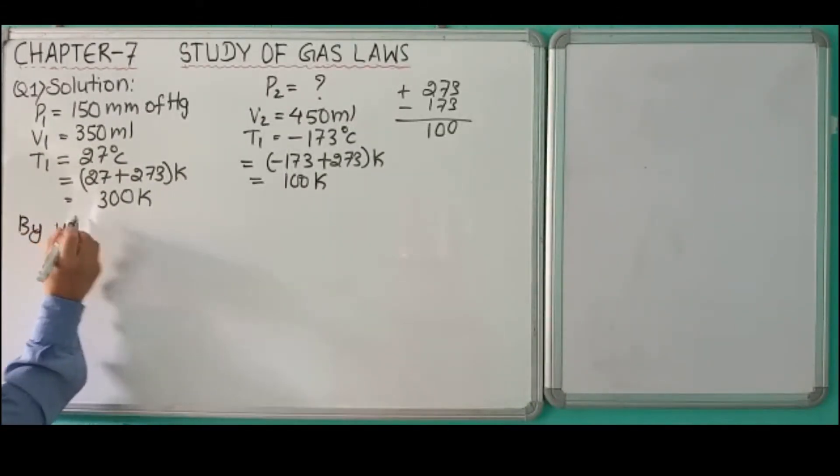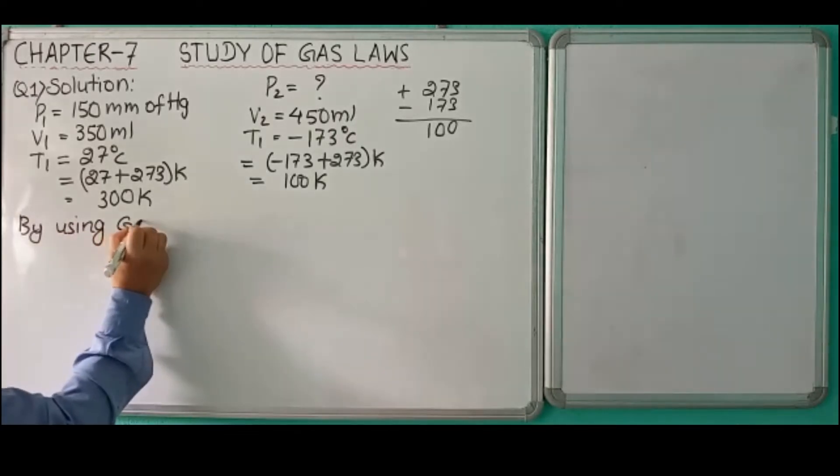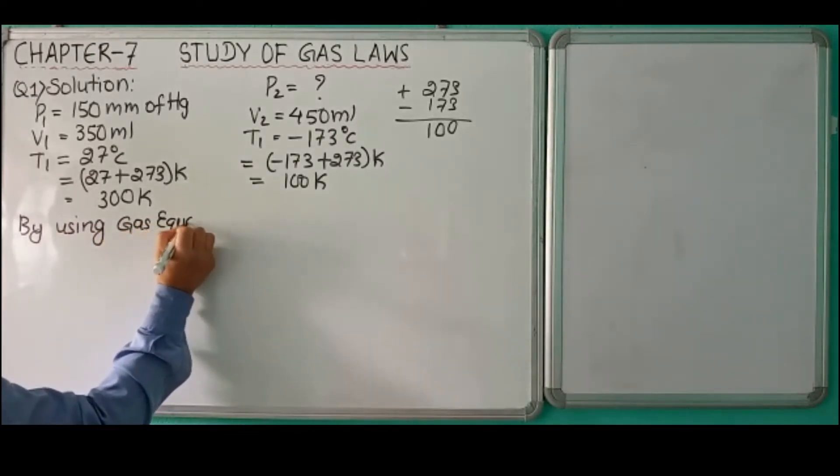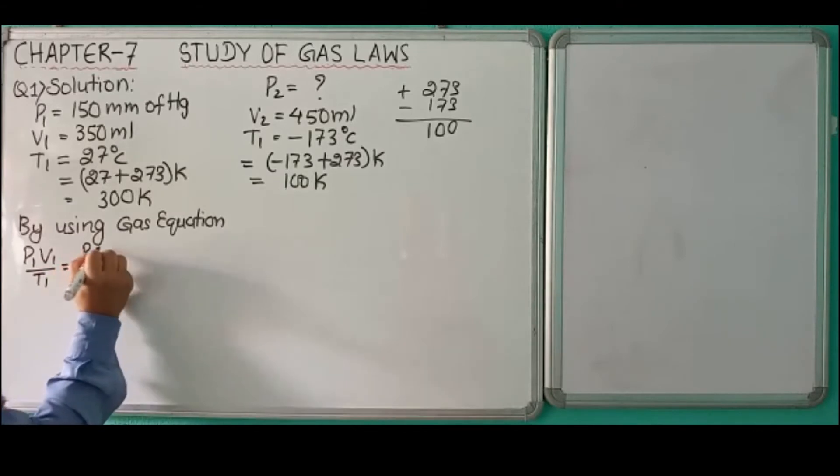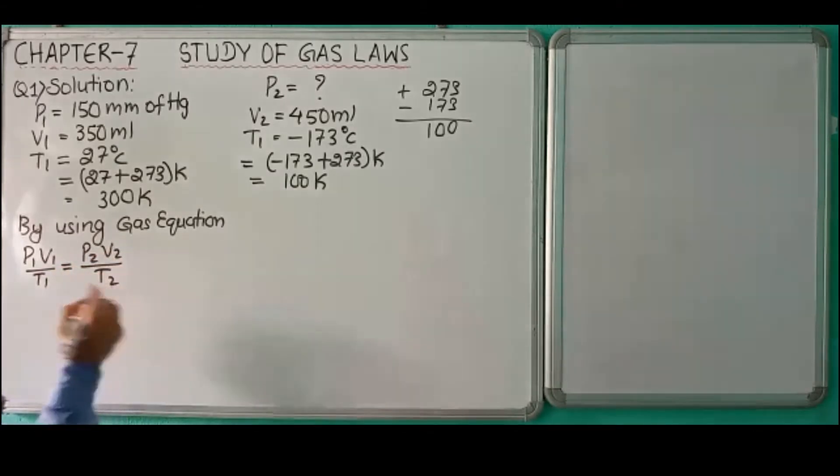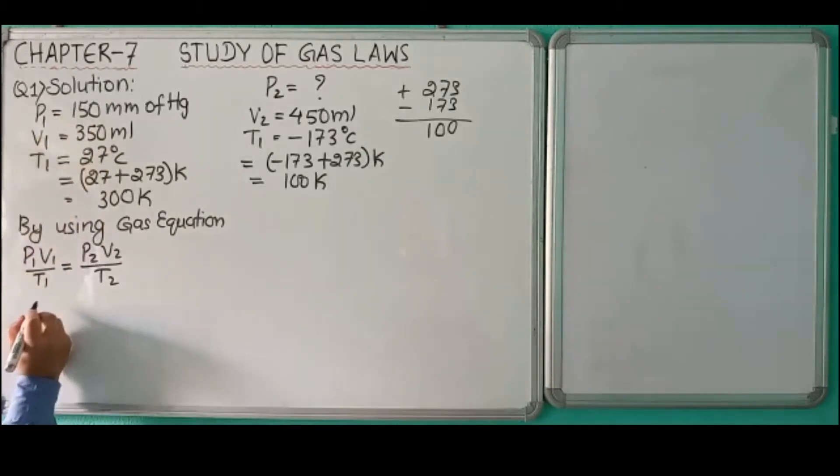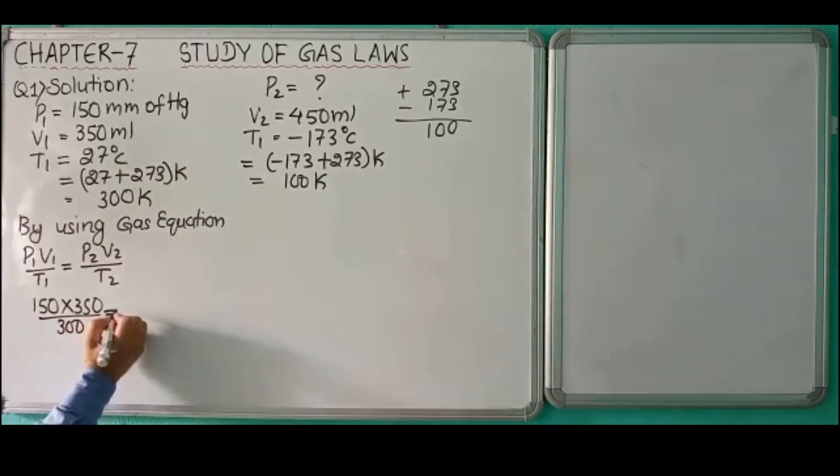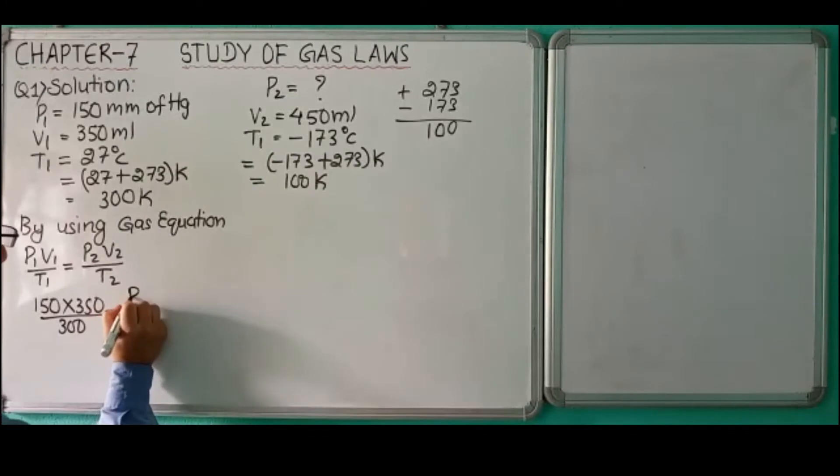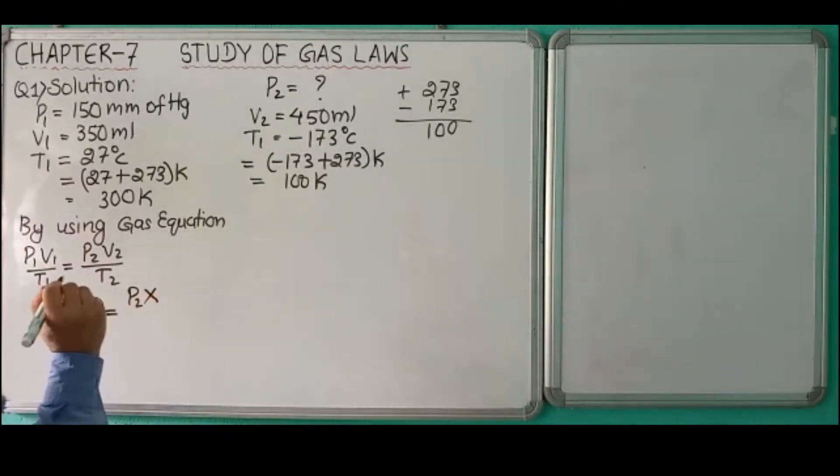We know the mathematical expression of gas equation: P1V1 over T1 equals P2V2 over T2. We'll substitute the values: P1 is 150, V1 is 350, over T1 which is 300 Kelvin, equals P2 times V2 which is 450, over T2 which is 100.